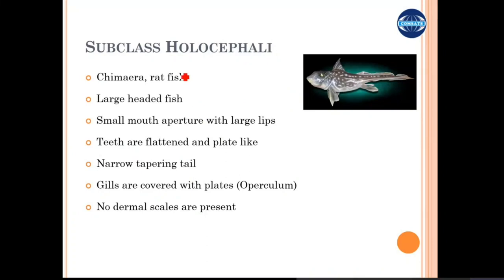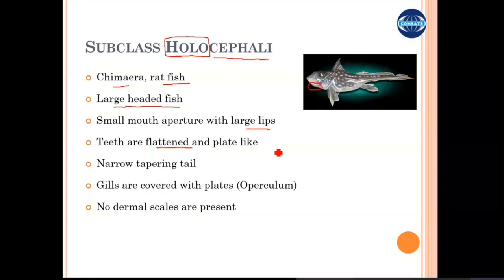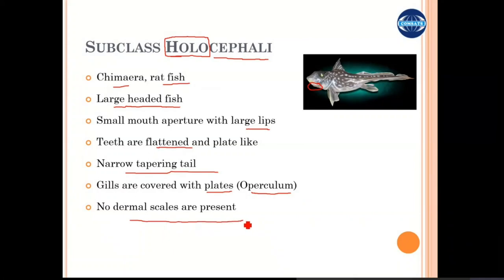The second subclass is Holocephali. 'Holo' means complete or whole and 'cephali' means head, so these animals have most of their body comprising their head — they are large-headed fish. An example is the chimaera or ratfish. Their mouth parts have larger lips but still point downward (ventral). Teeth are flattened like a plate for grinding food, and their tail is narrow and tapering. Gills are covered with cartilaginous plates called the operculum, and their skin is smooth without any scales.